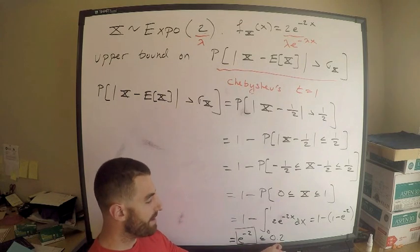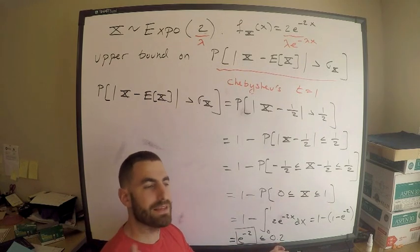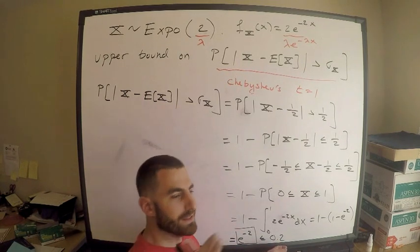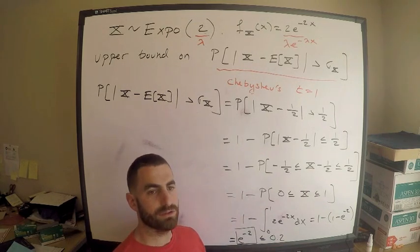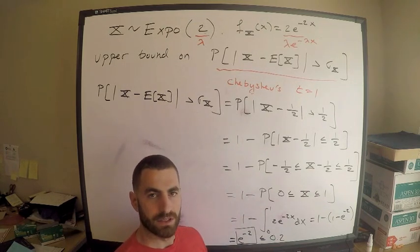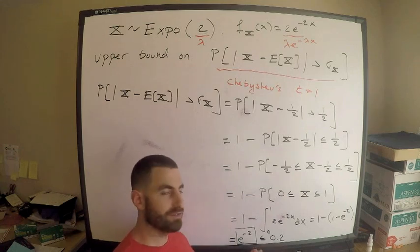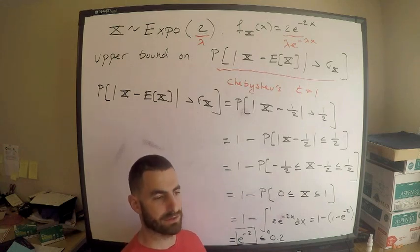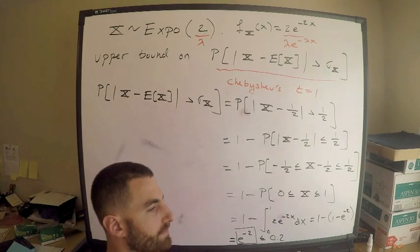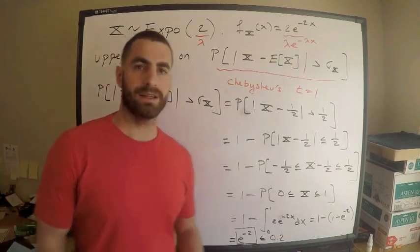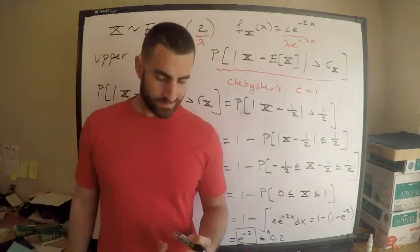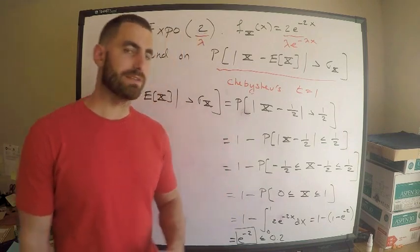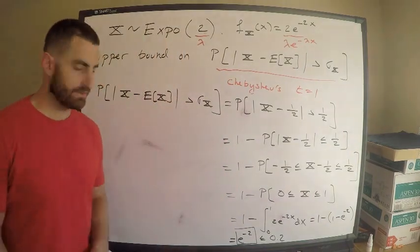e to the negative two is less than 0.2 — it's about 0.13. So the probability is bounded above by 0.2. This shows that the exact computed bound, e to the negative two, confirms it's well under that value. Thanks for tuning in — comment on the video and feel free to request anything.